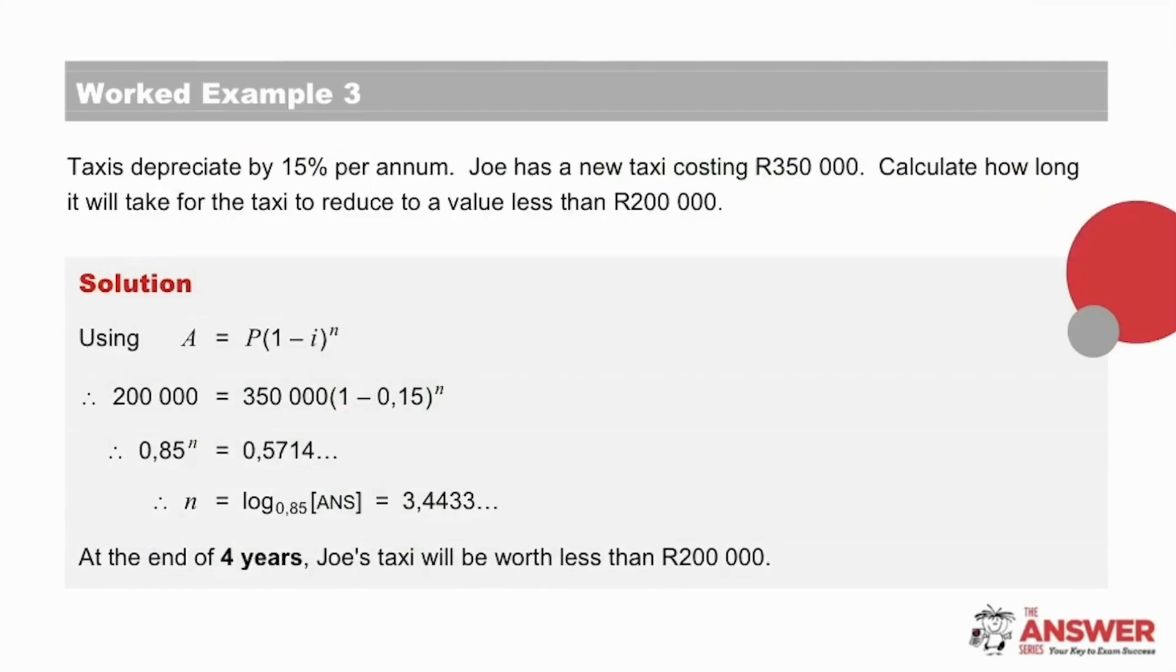In worked example number 3, we are given that taxis depreciate by 15% per annum. Joe has a new taxi costing 350,000 rand and we are asked to calculate how long it will take for this taxi to reduce to a value of less than 200,000 rand. The context of the question is a guide for whether to use simple or compound growth or decay. If neither simple nor compound is mentioned, compounding growth or decay can be assumed. So here we will use the compounding formula for depreciation.